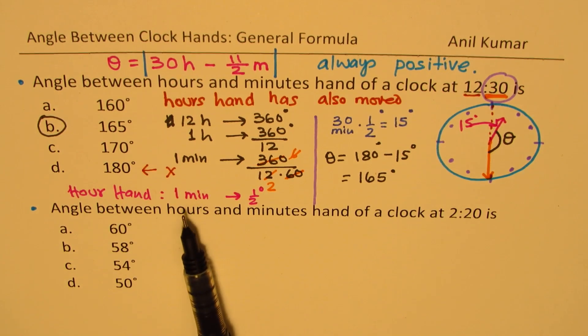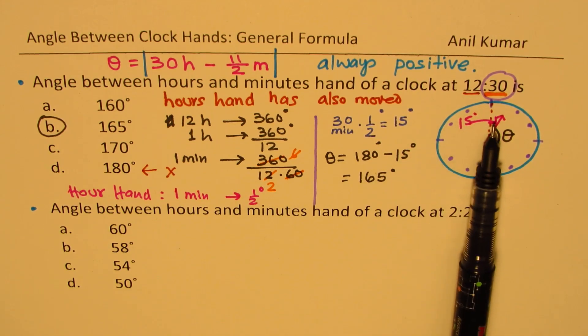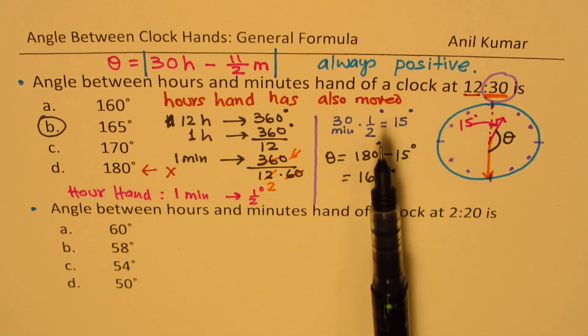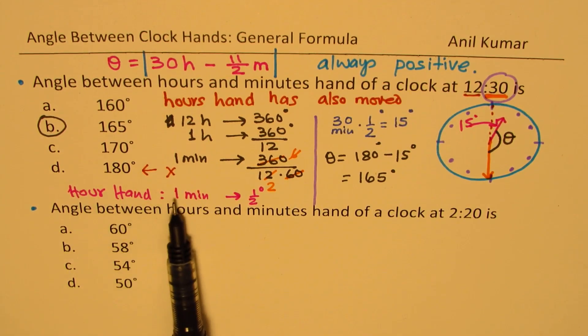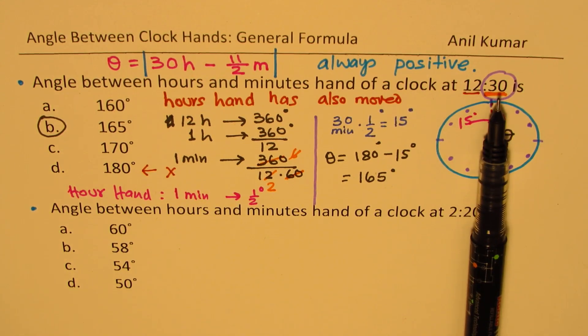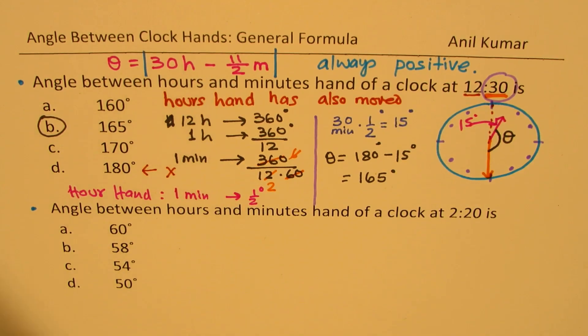So basically, we are always looking at the hour hand, and we can easily find the answer. In this situation, knowing that hour hand moves every minute by half degree helps to immediately get the solution. It is faster than the formula, which you can use.